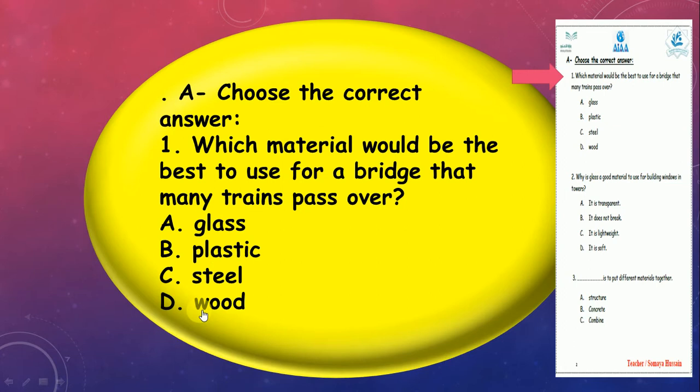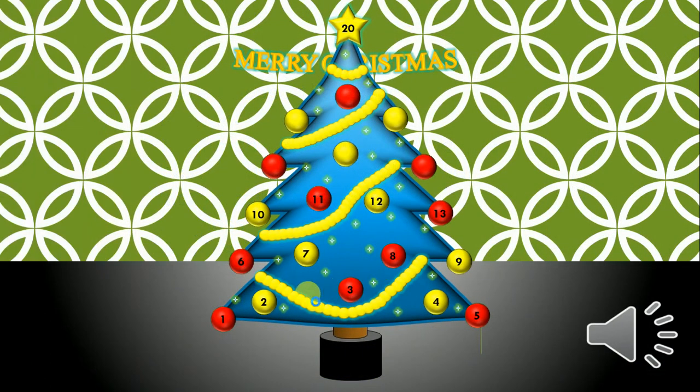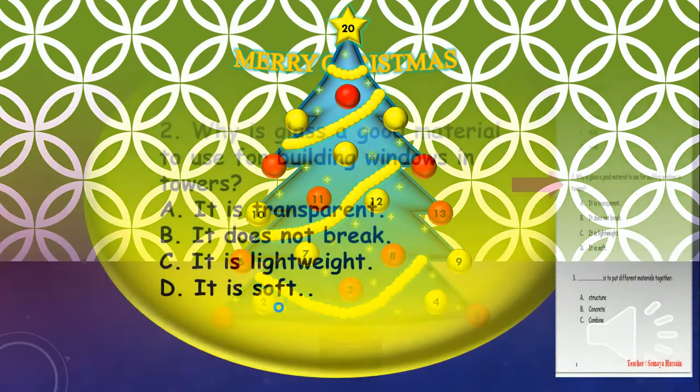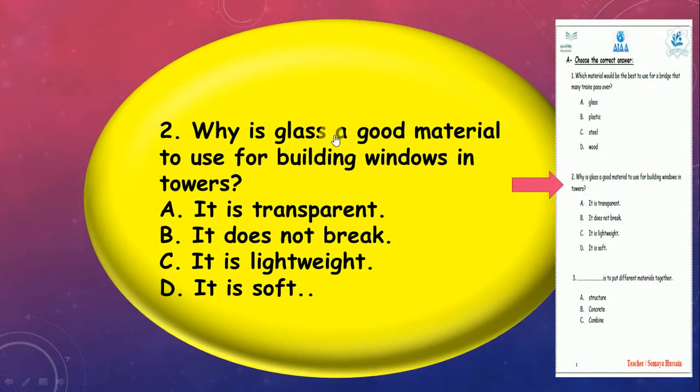Let's think together. This bridge, we need it to be very strong. Why? Because there are many trains, big heavy trains passing over. So we can't make it of glass, no, glass will be broken. Plastic? No. So it's steel. Super! So we're gonna choose steel. Good job, guys.